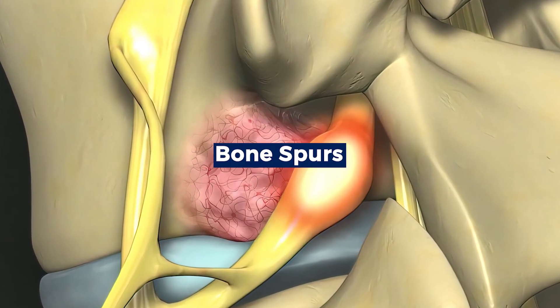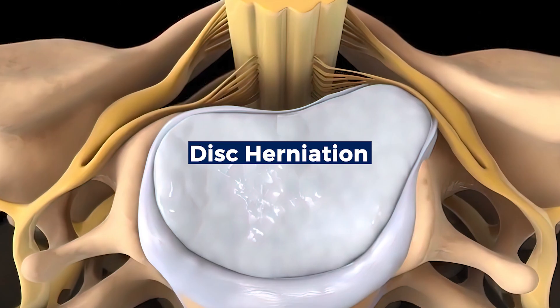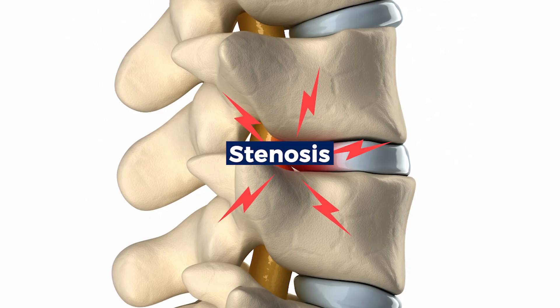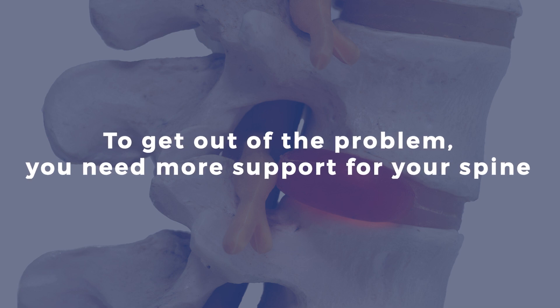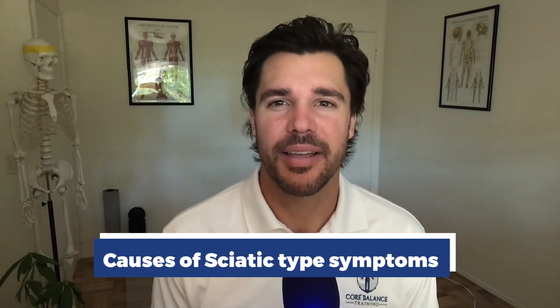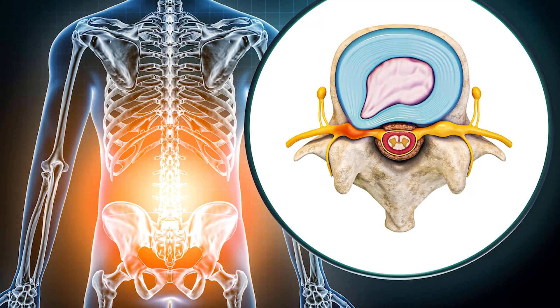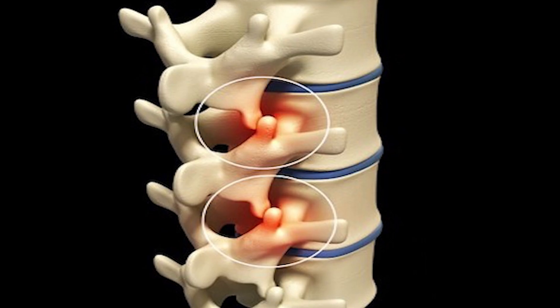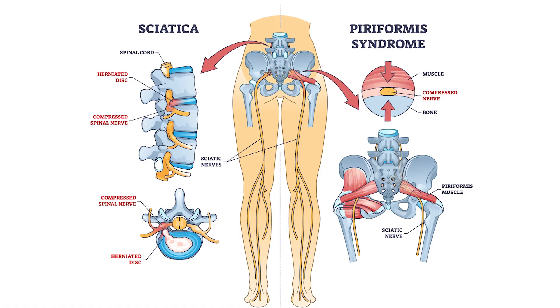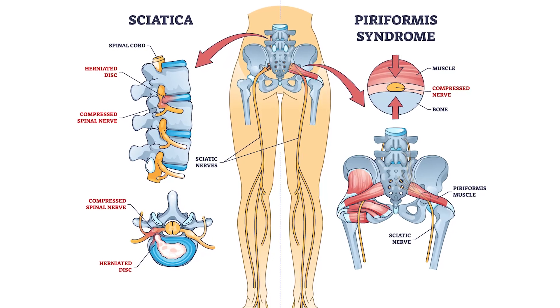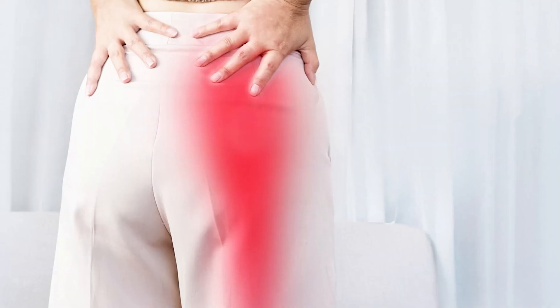No matter what the cause is — whether it's bony growth, a disc herniation, or stenosis — the solution is still going to be the same. In order to get out of the problem, you need to create more support for your spine. Today's topic is all the different things that can cause sciatic type symptoms: herniated disc, bulging disc, stenosis, facet pain, facet joint syndrome, bony growths, soft tissues, and other muscular type tissues that can press on a nerve through inflammation, causing the symptoms of sciatica — what people call sciatica — in your hips, legs, and thighs.